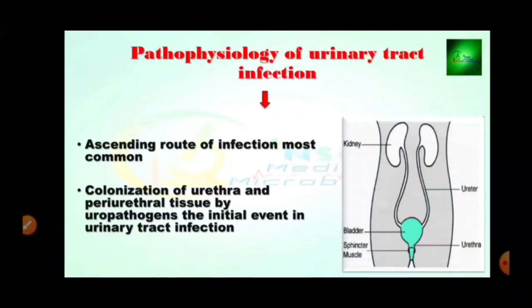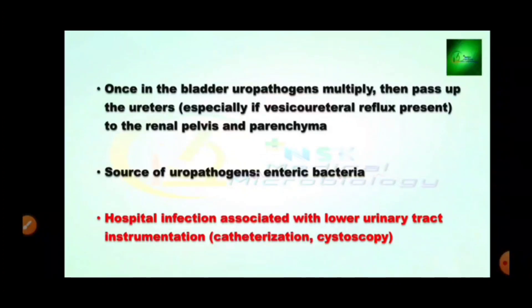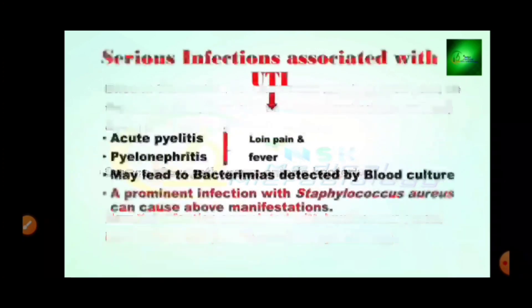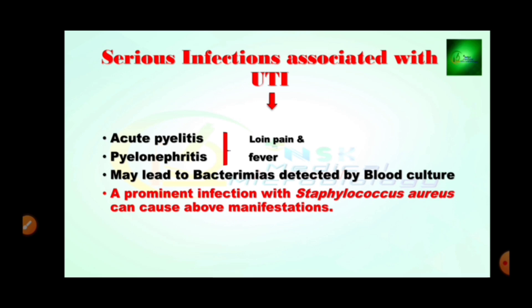The pathophysiology of urinary tract infection: the ascending route of infection is most common. Colonization of the urethra and periurethral tissue by uropathogens is the initial event in UTI. Once in the bladder, uropathogens multiply, then ascend through the ureter — especially if vesicoureteral reflux is present — to the renal pelvis and parenchyma. The source of uropathogens is enteric (intestinal) bacteria. Hospital infections are associated with lower urinary tract instrumentation, catheterization, and cystoscopy. Serious infection associated with UTI — acute pyelonephritis — may lead to bacteremia detected by blood culture. A prominent infection with Staphylococcus aureus can cause the above manifestations.